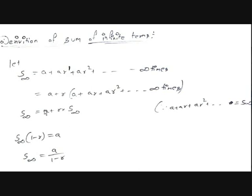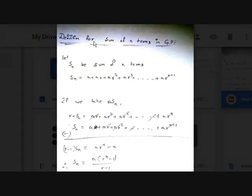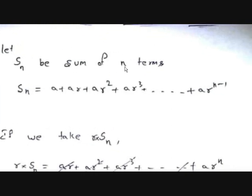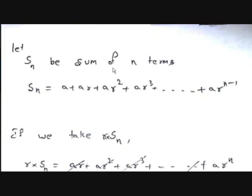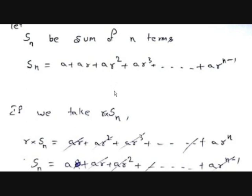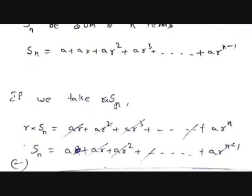Now let's derive the sum of n terms. Let Sn = a + a·r + a·r² + a·r³ + ... + a·r^(n−1). You might think we can take r common the same way, but it becomes very difficult. Let's first see the standard derivation and then discuss what happens with that approach.